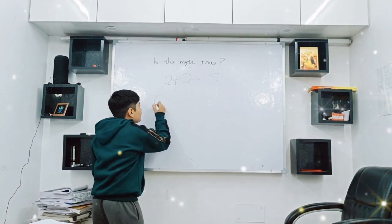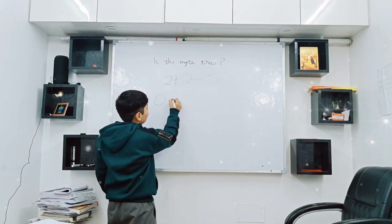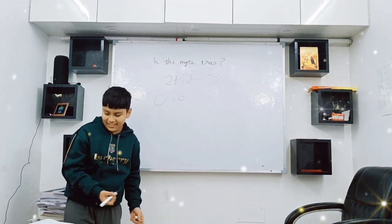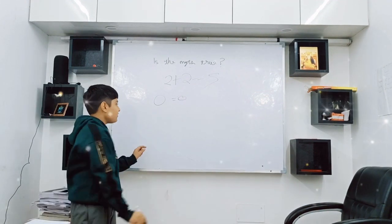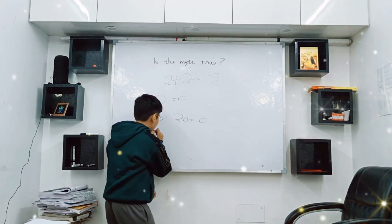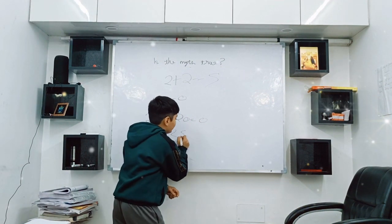Guys, 0 is equal to 0. We know this. And 20 minus 20 is equal to 0. 25 minus 25 is equal to 0.